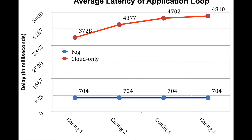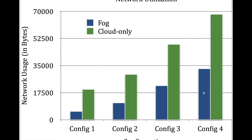Moving to the fourth graph, which is for average latency — here we can see the cloud-based placement has shown higher delay than fog-based placement, which continues to increase as configurations are increased. In contrast, the fog-based latency is constant across all configurations at 704 milliseconds, which we can clearly see in the graph.